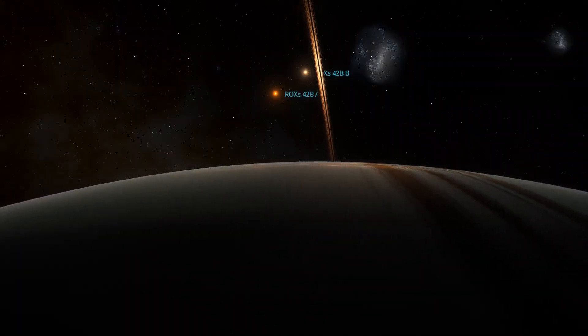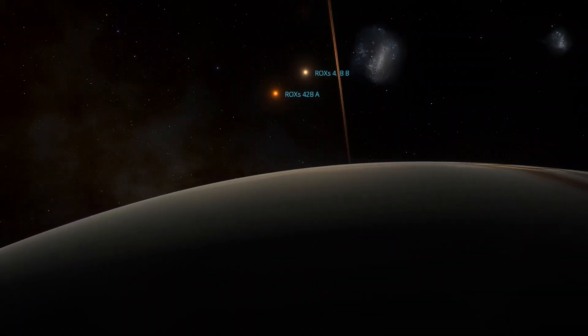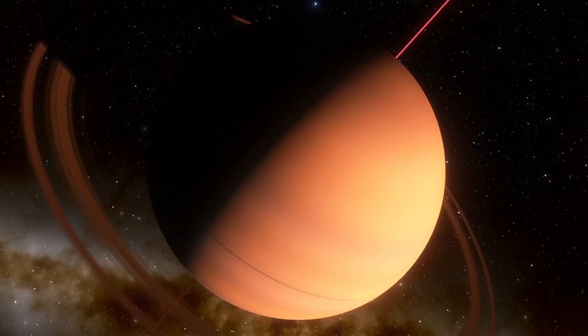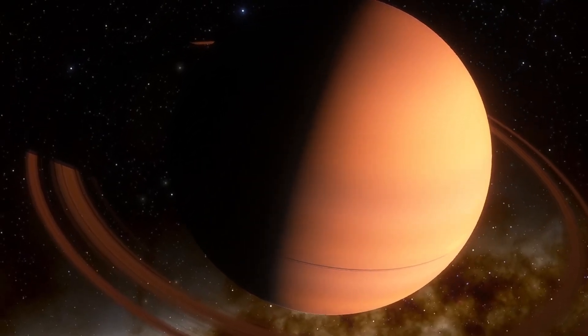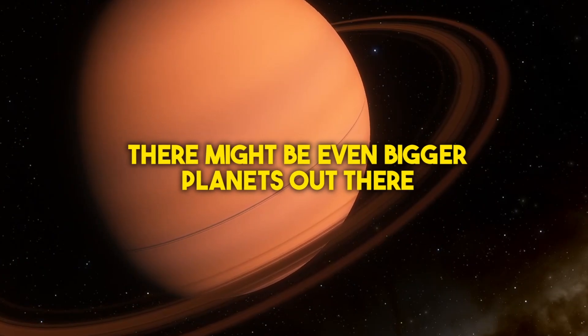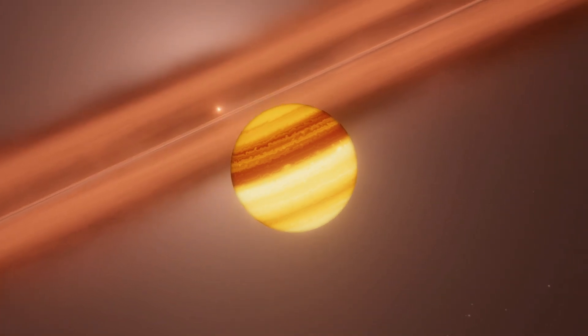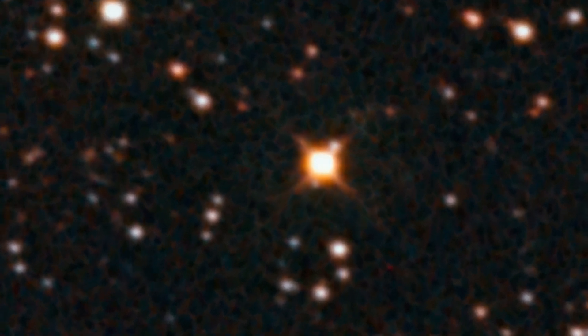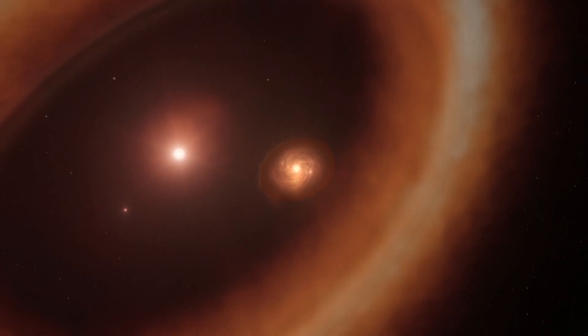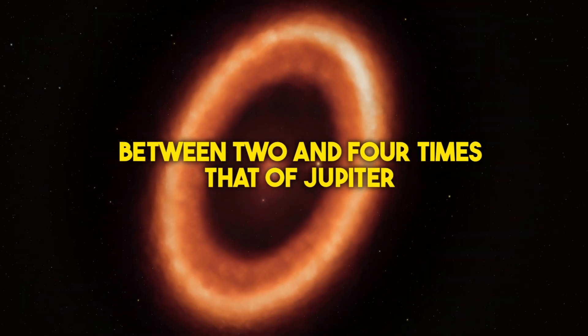However, not everyone is convinced that ROXs 42Bb is the absolute largest. Thane Curry, an associate professor of physics and astronomy at the University of Texas San Antonio, discovered this colossal planet using the Keck Space Telescope back in 2013. But he believes there might be even bigger planets out there, including some still in the process of forming, known as protoplanets. For instance, two such protoplanets orbit the star PDS-70, about 370 light-years from Earth. These giants are still being assembled, with radii estimated to be between 2 and 4 times that of Jupiter.